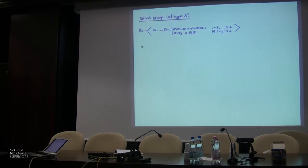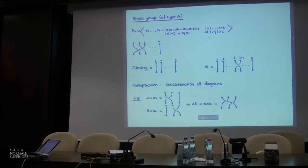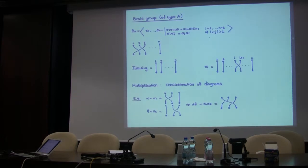BN is generated by N-1 generators that satisfy the usual braid relations. Each element of BN can be represented by a diagram of N dots at the top and N dots at the bottom, where each dot at the top is connected with exactly one dot at the bottom, and we keep track of the way the strands cross with each other. The identity braid connects the first dot with the first dot, the second with the second, and so on. The generators sigma_i correspond to permutation of i and i+1. The crossing direction matters — if you cross the other way, you obtain the inverse sigma_i^{-1}. Multiplication is given by concatenation of diagrams.